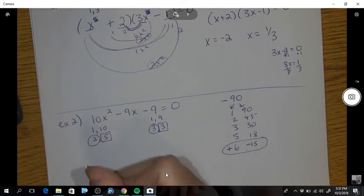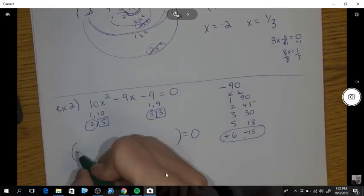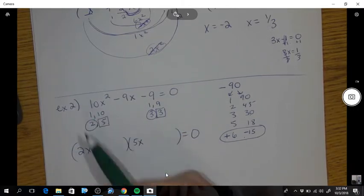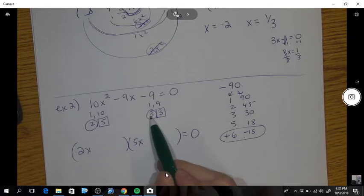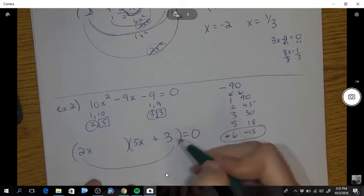Okay? So now when I start, I know that this is a 2x and a 5x because the first has to get me 10x squared. Now I circled this and circled this so that the outsides are together.